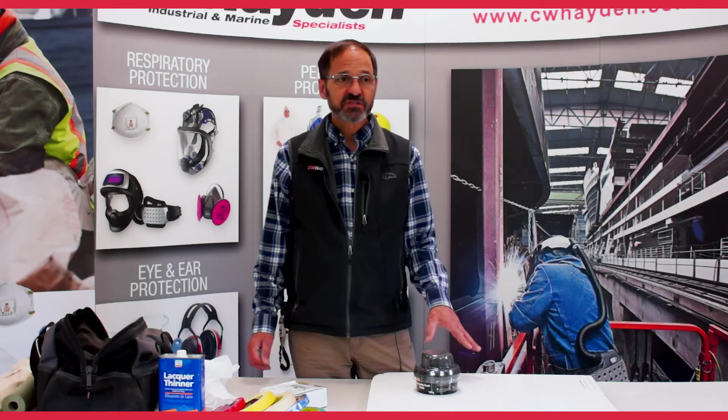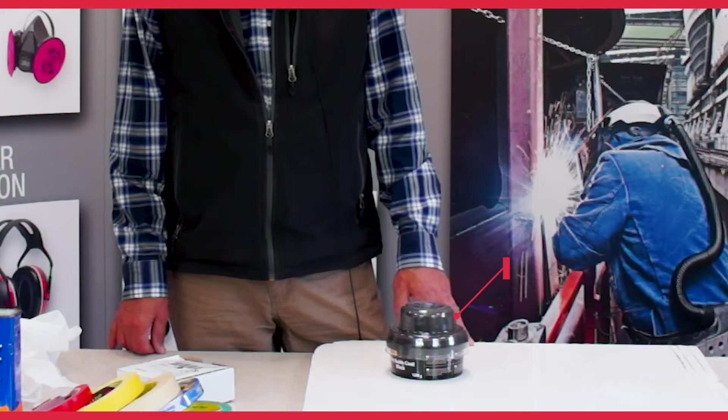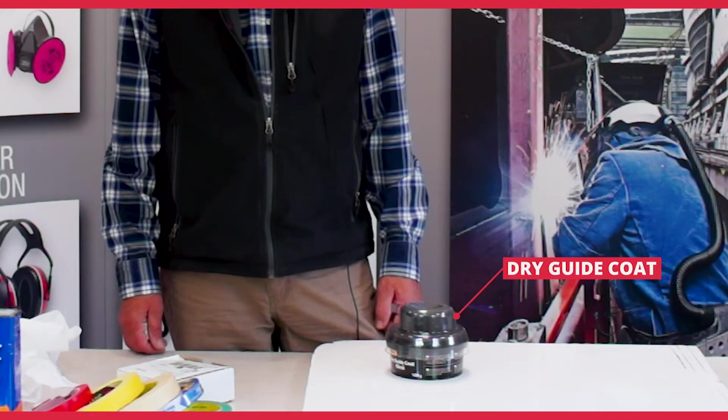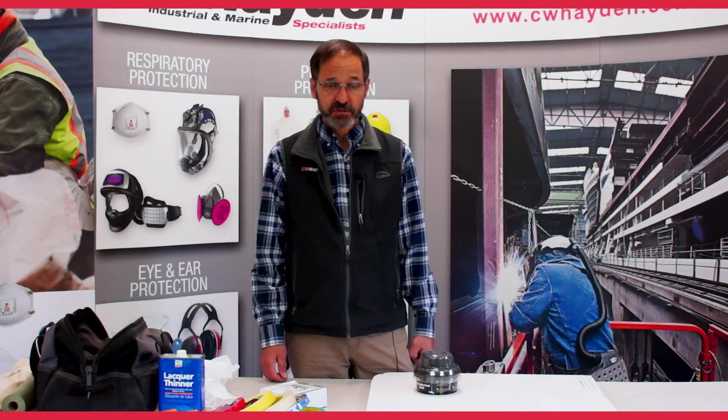One of the easiest ways to tell when you have sanded far enough is to use a product called Dry Guide Coat, which is available from a few different manufacturers. What I'd like to do is I'll first sand this panel and then I'll demonstrate the Dry Guide Coat and how it works.